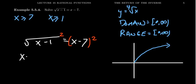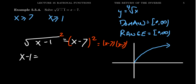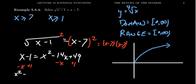On the left-hand side, squaring the square root gives you x minus one. On the right-hand side, we have to FOIL: x minus seven squared is x minus seven times x minus seven. Using the binomial theorem or FOIL, the right-hand side becomes x squared minus 14x plus 49. Now we've turned our equation into a quadratic. Moving everything to the right — subtract x and add one to both sides — gives x squared minus 15x plus 50 equals zero.